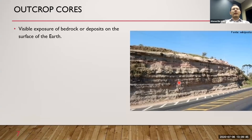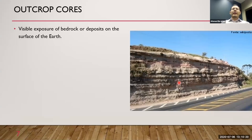The second source for cores is outcrop cores. Sometimes we are not able to get reservoir cores — for example, if the well is already drilled and we want to do some stimulation job like acidizing, but don't have cores to test which fluid is suitable. Our formation may be exposed at the surface in a certain area, so we go there and cut an outcrop block to do analysis.